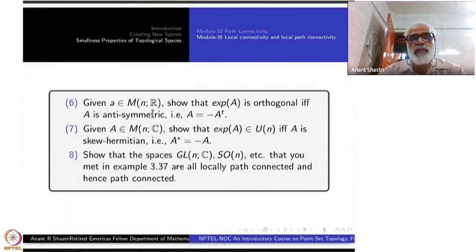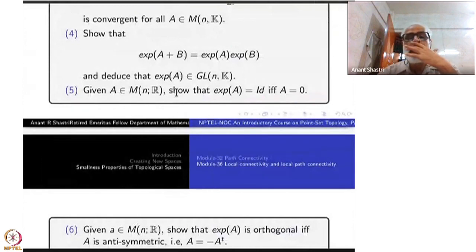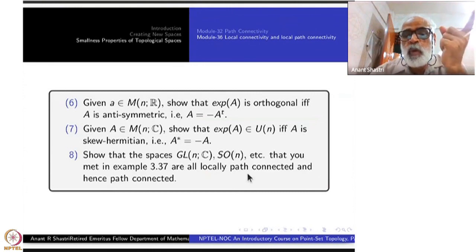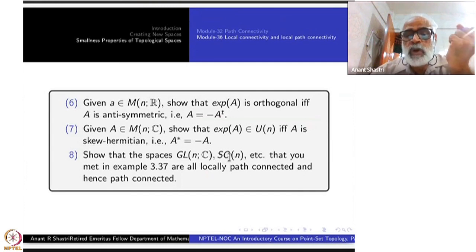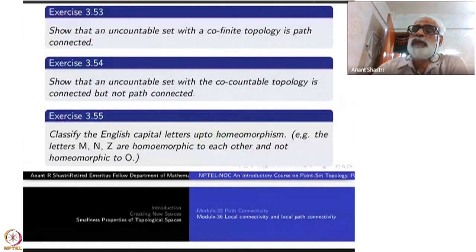Another exercise concerns matrix spaces: GL_n, SO_n, and related groups. These are all locally path-connected spaces. Since the previous exercises show they are connected, it follows they are path connected. The exercise asks you to show they are locally path connected — earlier exercises will help you solve it. Let us close here.